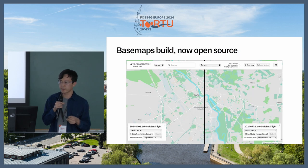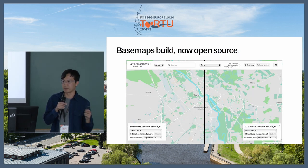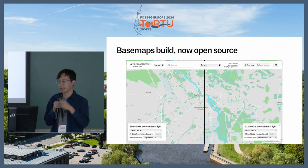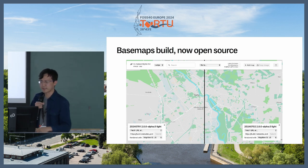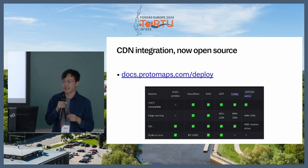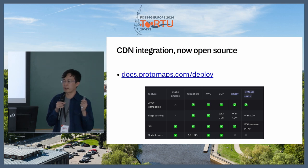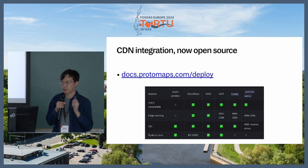So the base maps build was open core and now it's open source. You can download an OpenStreetMap-based build that's about 110 gigabytes for free online, built once a day. The CDN integration — running on Amazon or Cloudflare — was proprietary code before, and now it's just part of the public documentation with instructions to do it in about 20 minutes.